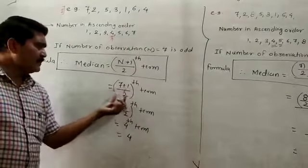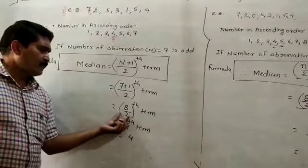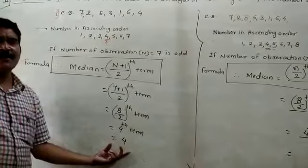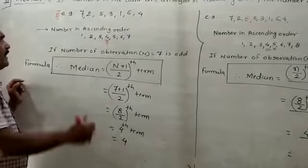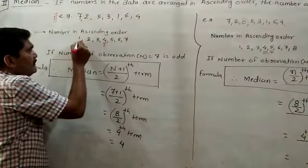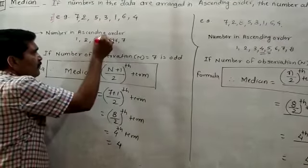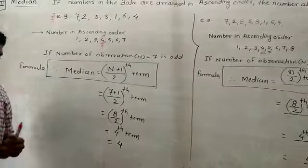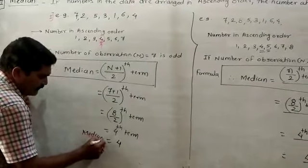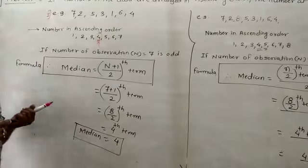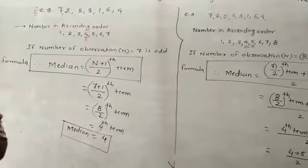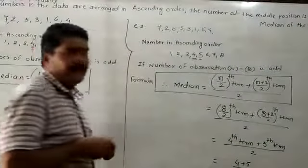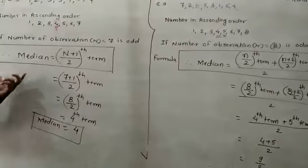7 plus 1 is 8, divided by 2 gives the 4th term as the median. When you arrange the data in ascending order, the 4th term is: 1st term is 1, 2nd term is 2, 3rd term is 3, and the 4th term is 4. Therefore, median equals 4. Now we will see how to find the median when the number of observations are even.